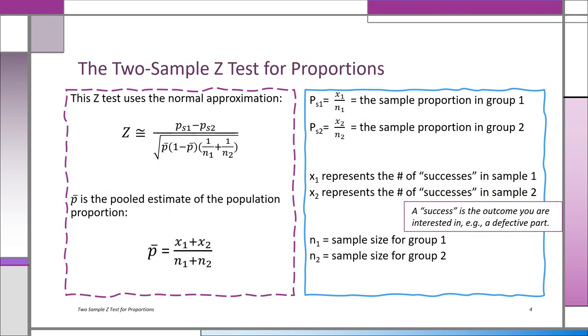The z test is actually an approximation, which by the way is why we can't use the t if we have a small sample size, because that would be an approximation to an approximation and we don't really want to go that far.